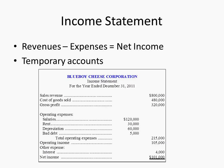This is a multiple-step income statement, which we'll cover in detail in Chapter 4. It shows sales minus cost of goods sold, giving you a gross profit subtotal. Then operating expenses are separated from non-operating expenses to arrive at net income. This contrasts with a single-step income statement, which we can also call the simple-step income statement.